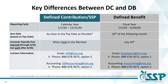Finally, the contact information is also different for DC and DB. For defined contribution, the best way to reach us in the SSP department is via email at ssp@trsil.org. We also have our brand new phone system up and running — the number is 888-678-3675 and we are option number three. On the DB side, the phone number is exactly the same but they are option number one. If you are trying to reach the accounting department, use the same phone number but they are option number two.